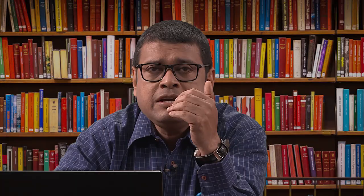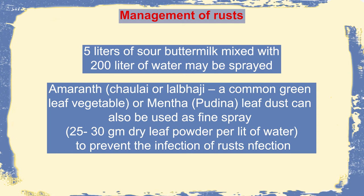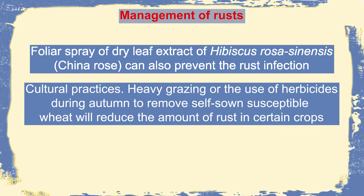Again, late sowing or late-maturing varieties — by the time you are sowing the seeds, the wheat pathogen will be reduced in the soil or in the air so the infection may be avoided. Sometimes there are indigenous methods like in South India, they are using sour buttermilk or sometimes they are using lalbhaji, a common green leaf vegetable, or mentha, which can bring about control of rust disease of wheat. A unique hibiscus rosasinensis — china rose — foliar spray of dry leaf extract of china rose sprayed on wheat plant can protect it from rust infection. Cultural practice is also very important; if the plants are growing at a distance, dissemination can be minimized. These are the different methods by which Puccinia can be controlled.